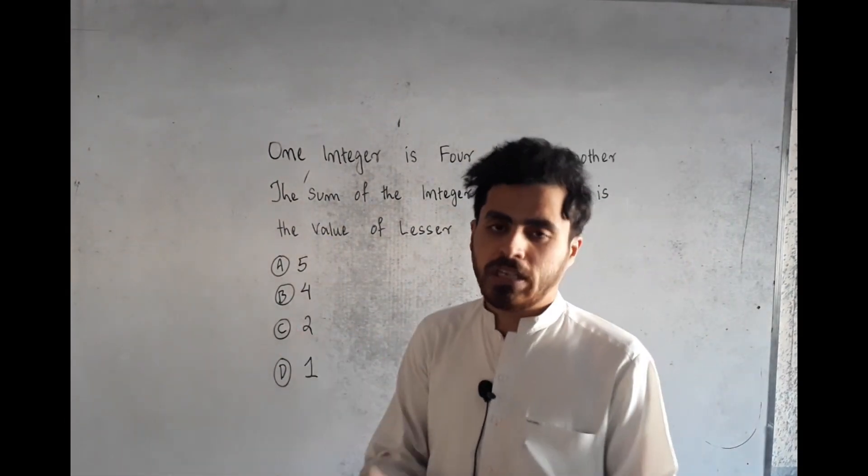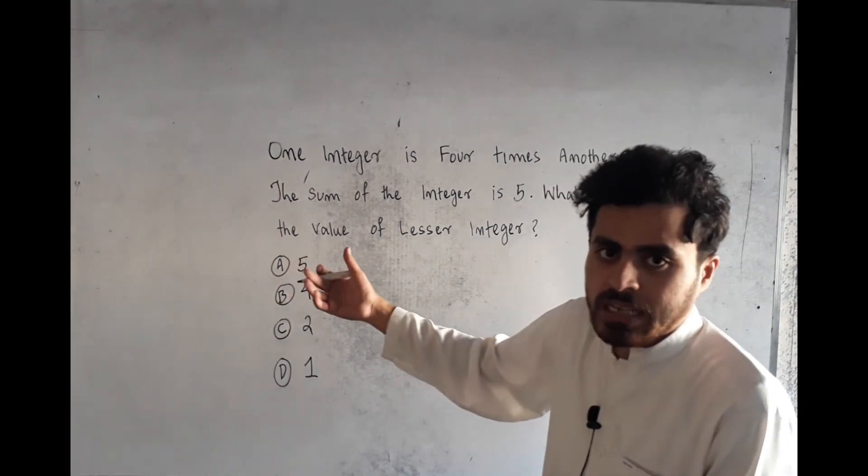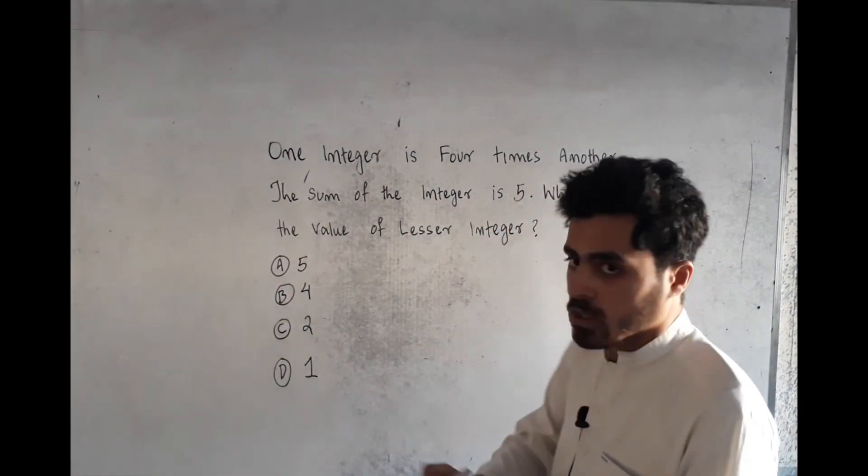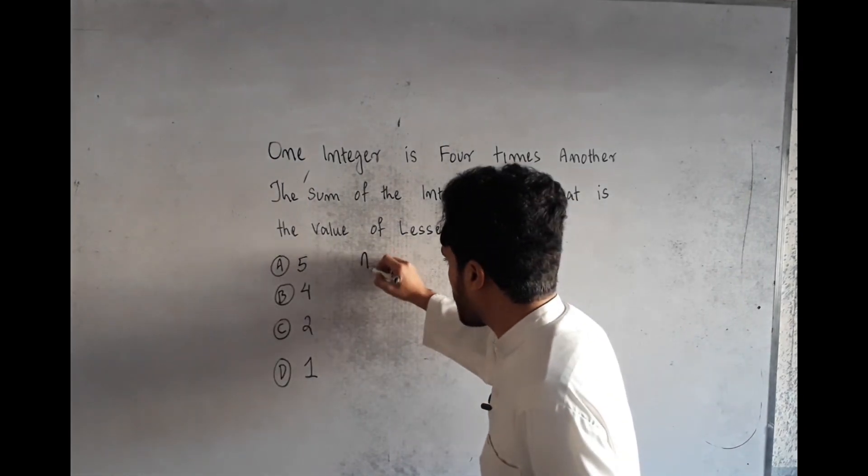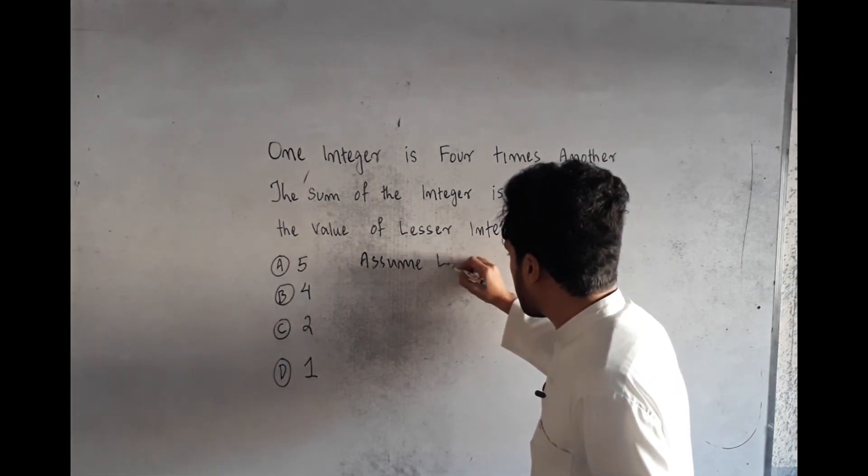We have two integers here. One integer is less and the other integer is larger. The sum of the integers is 5. We may assume the lesser integer is...